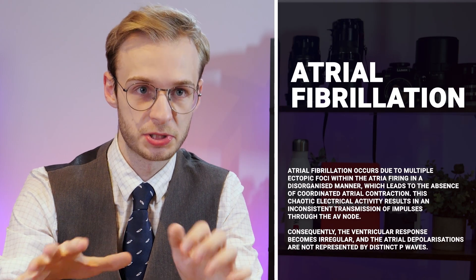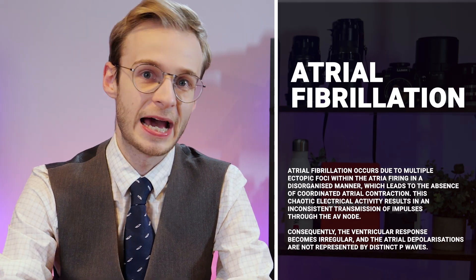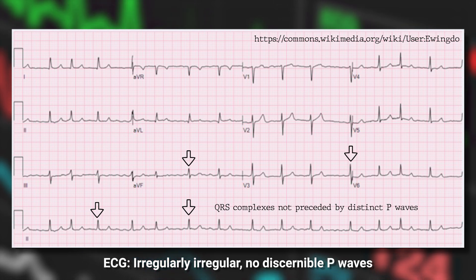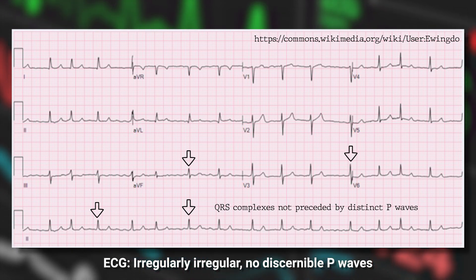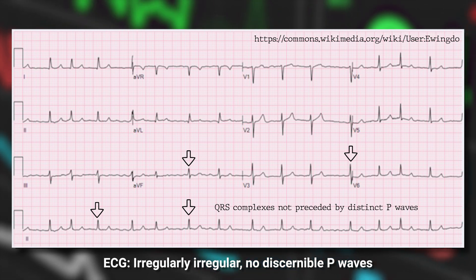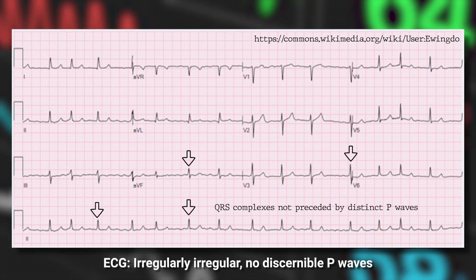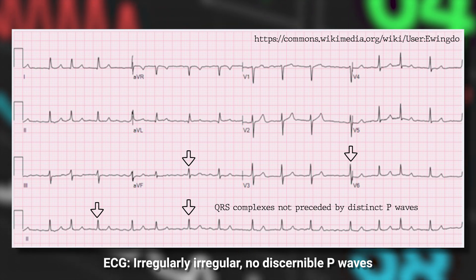Starting with atrial fibrillation — common and sometimes curable. AF occurs due to lots of different foci, leading to an absence of coordinated atrial contraction. That chaotic electrical activity results in very inconsistent transmission of signals through the atrioventricular node, making the ventricular response irregular. On an ECG, this classically results in an irregularly irregular rhythm without distinct P waves.